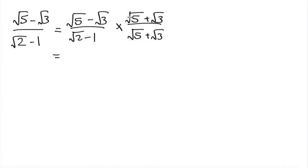Foiling this out, we get root 5 times root 5 is 5. Root 5 times root 3 is positive root 15. Negative root 3 times root 5 is negative root 15, and negative root 3 times positive root 3 is negative 9.